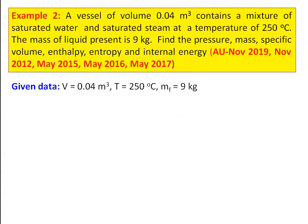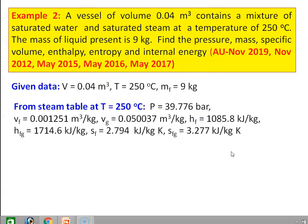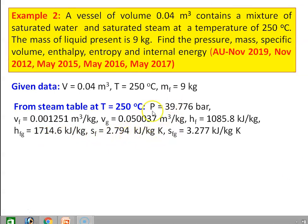Given: volume = 0.04 m³, temperature = 250°C, mass of liquid Mf = 9 kg. From steam table at T = 250°C: pressure = 39.776 bar, Vf = 0.001251 m³/kg, Vg = 0.050037 m³/kg, Hf = 1085.8 kJ/kg, Hfg = 1714.6 kJ/kg, Sf = 2.794 kJ/kg·K, Sfg = 3.277 kJ/kg·K.